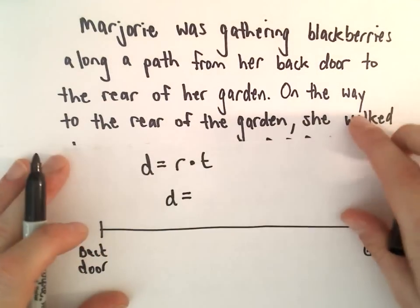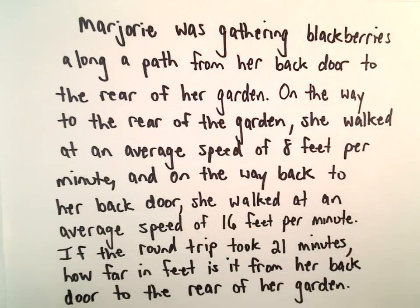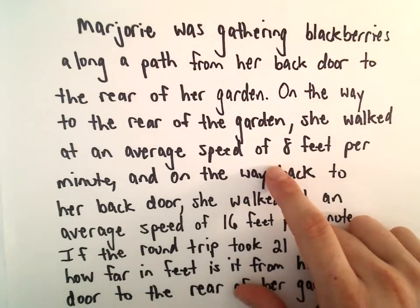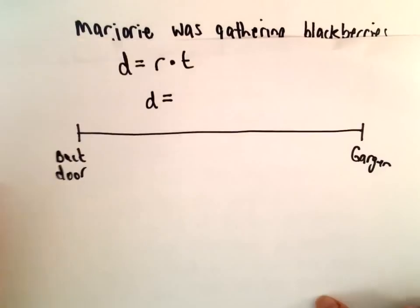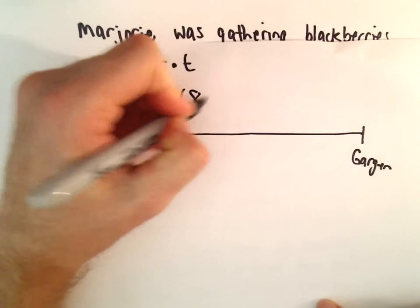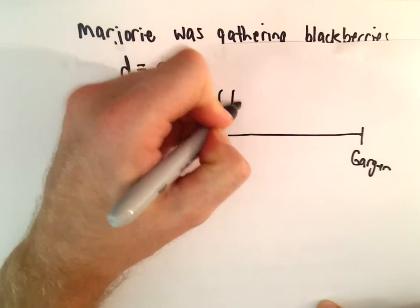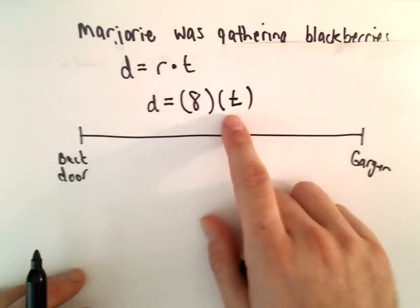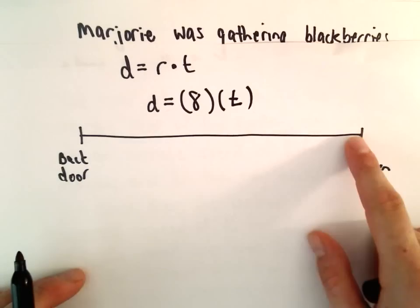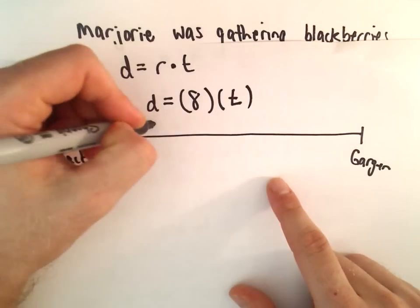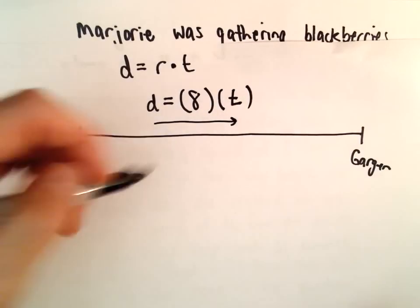We know that the rate on the way out was 8 feet per second. And again, we don't know exactly how long she walked. So we'll just let T denote the number of seconds that she takes going to the garden.